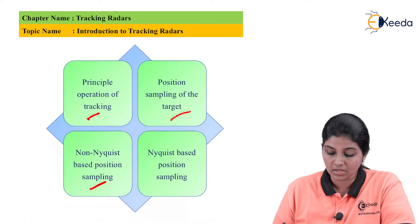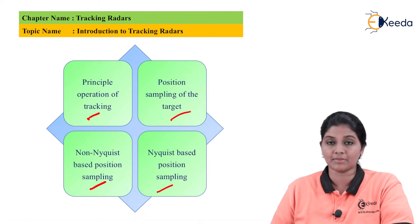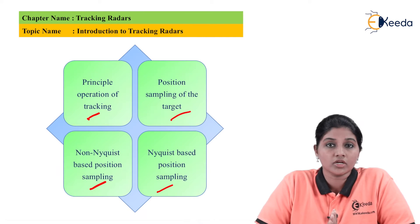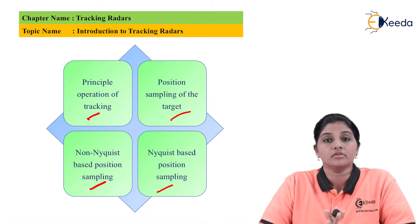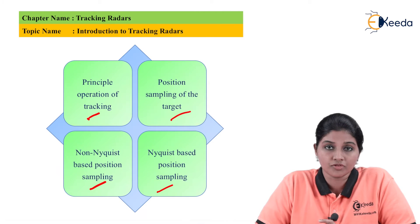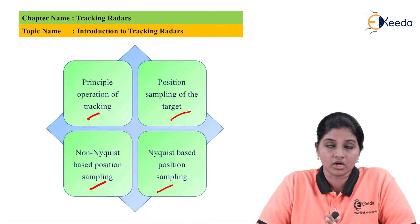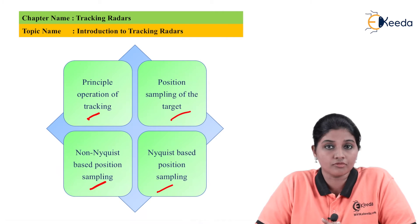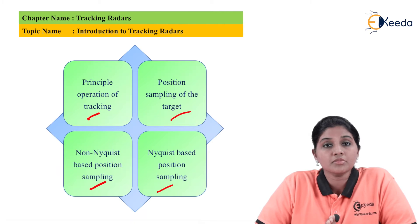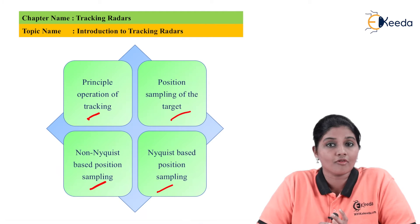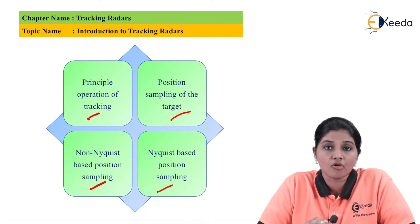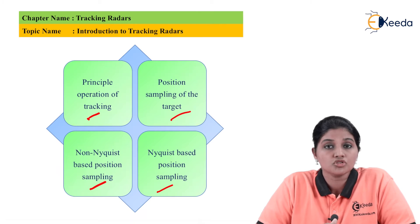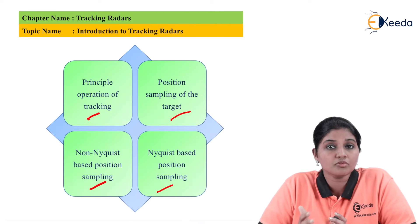Radar is basically used for detecting and locating the position of an object. The tracking radar system operates by measuring the coordinates of the target and provides data in order to find the position or location of the target. We can also use that data for predicting the future position of the target. The data can be in the form of range, angular velocity, azimuth angle, elevation angle, or even Doppler shift.